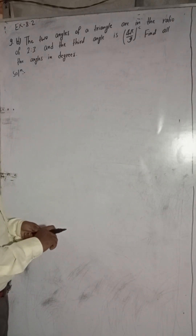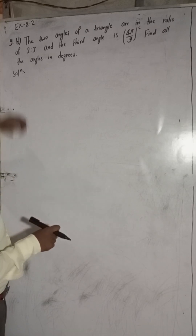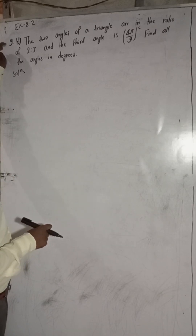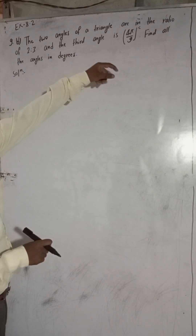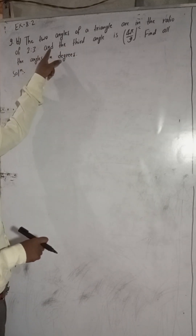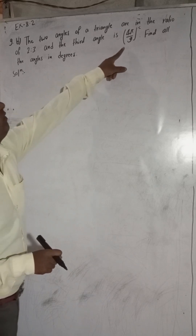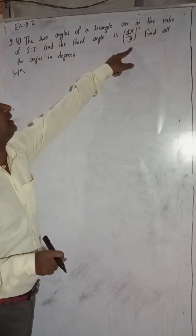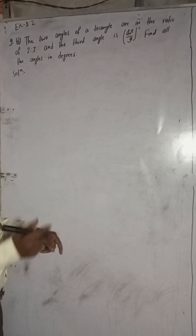Hi everybody, welcome back to Bimal Sarji's YouTube channel. The problem: two angles of a triangle are in the ratio of two to three, and the third angle is 4π/9 radian. Find all the angles in degree.